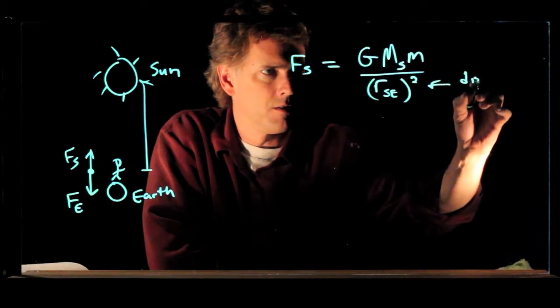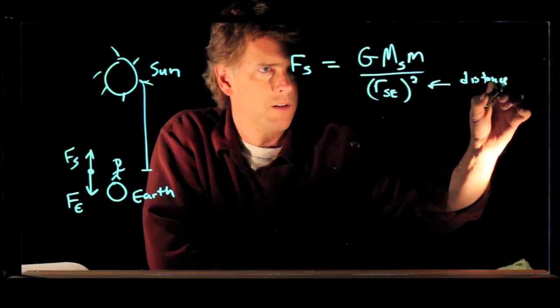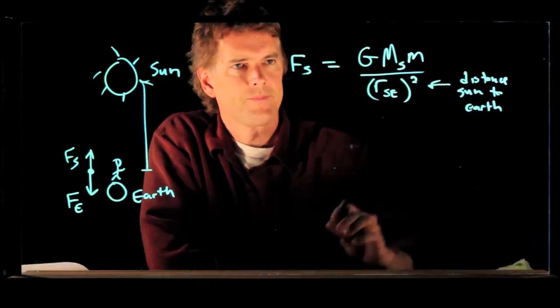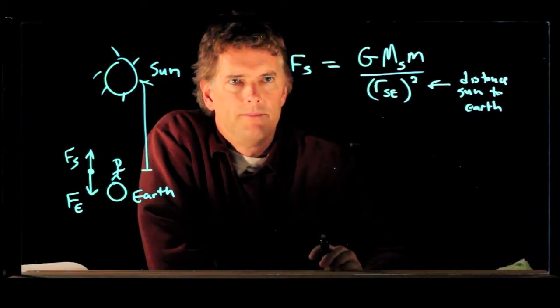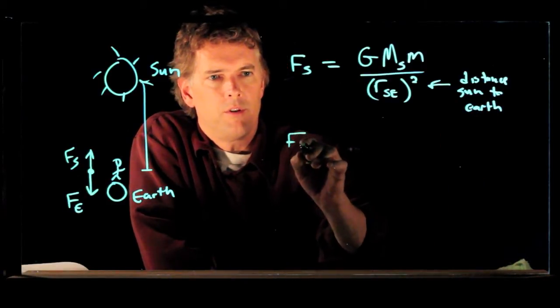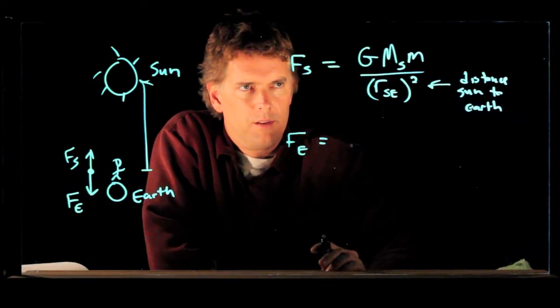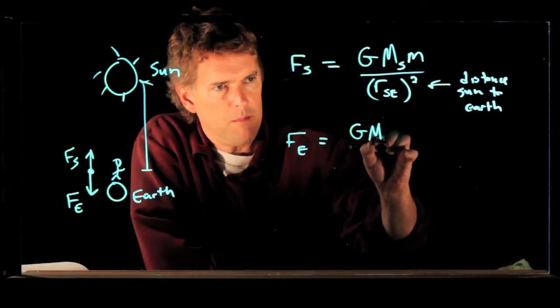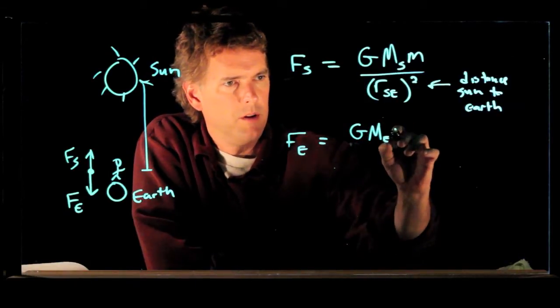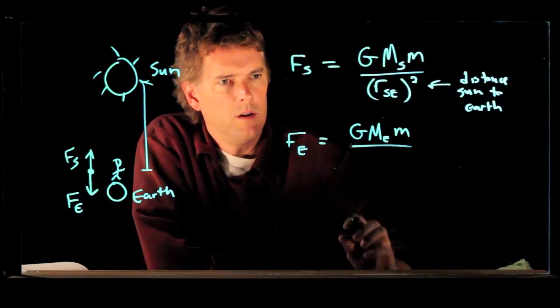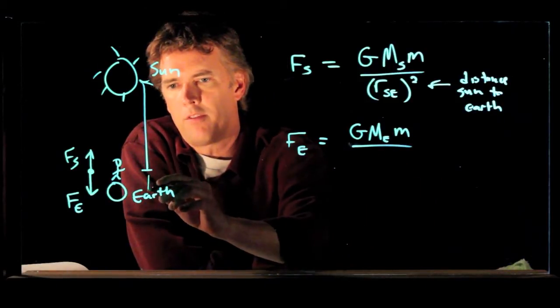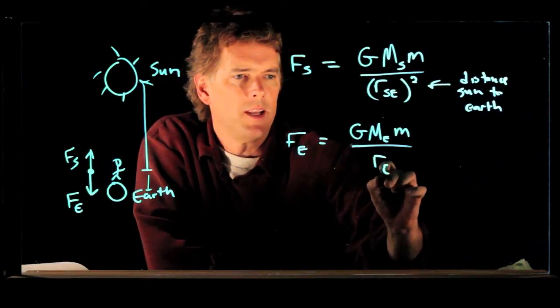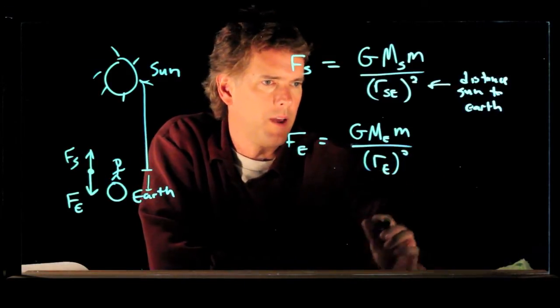And this is the distance from the sun to the earth. Okay, what about the force from the earth? Well, that's the same equation, right? G mass of the earth, little m, over how far you are from the center of the earth. And that's what we just call the radius of the earth. We're going to square that.